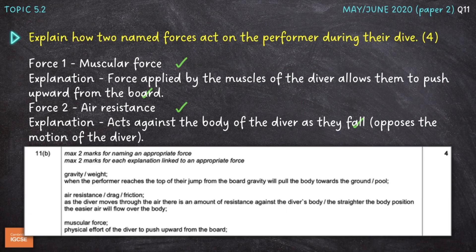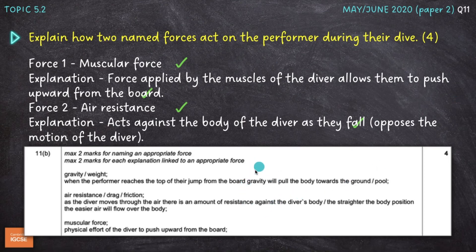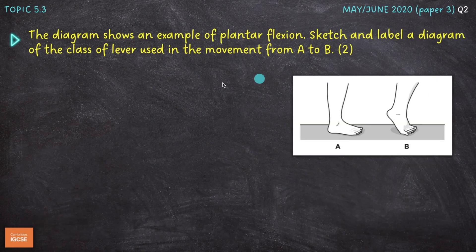Looking at the mark scheme, we could of course have gone for gravity or weight — perhaps the most obvious force for a diver — as well as air resistance, drag or friction, and muscular force. Pause the video here and have a look at the specific explanations provided for a broader understanding. We'll move on to the next question on topic 5.3 — levers again.